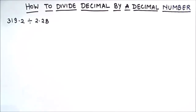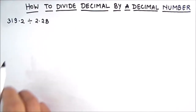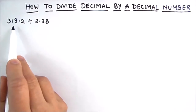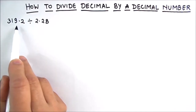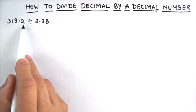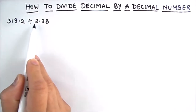Hello everyone. In this video we will be learning how to divide a decimal number by a decimal number. We will be solving a few examples, so let's start with our first example: 319.2 divided by 2.28.